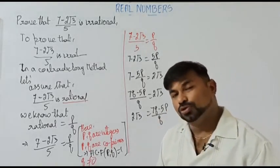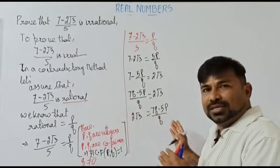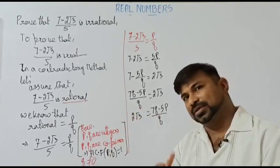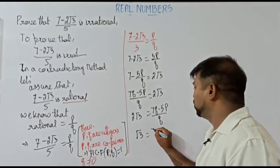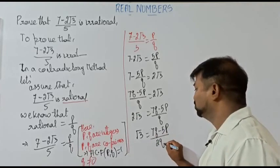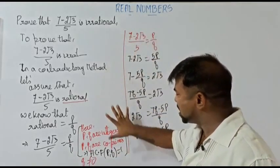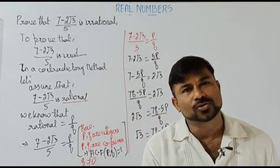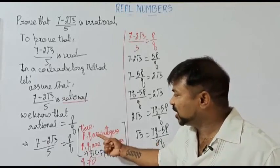Taking the LCM, we get (7Q - 5P) / Q = 2√3. Rearranging so that only the square root is on the left side and sending the 2 to the other side: √3 = (7Q - 5P) / 2Q. So I have isolated only the square root and sent all remaining terms to the other side.